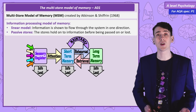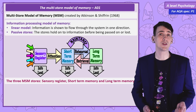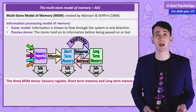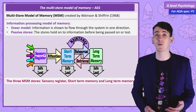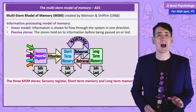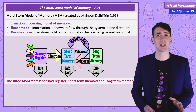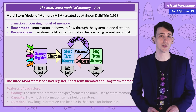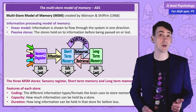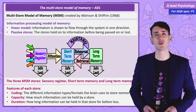The stores are sensory register, short term memory, and long term memory. As we go through them, keep in mind we need to remember three features of each of these stores: their coding, capacity, and duration.